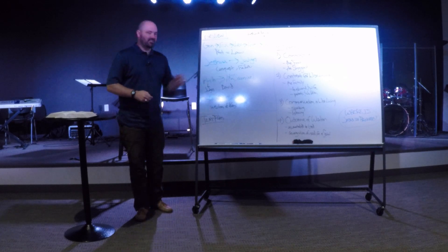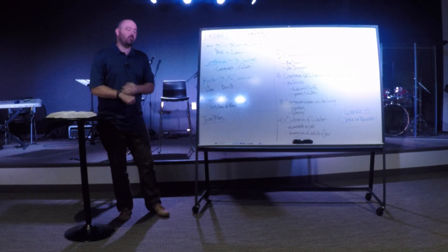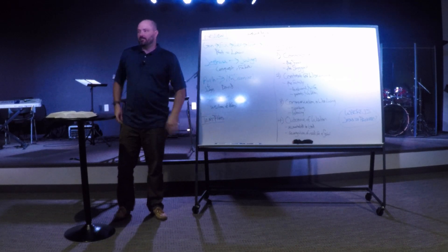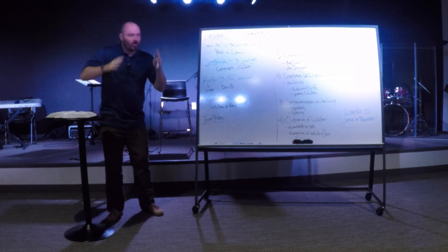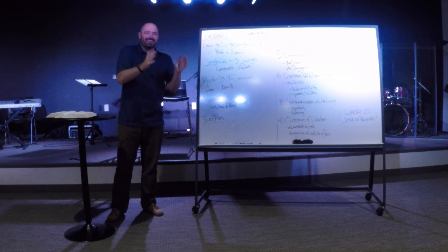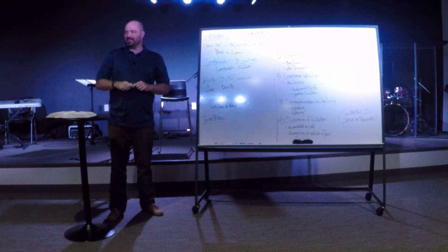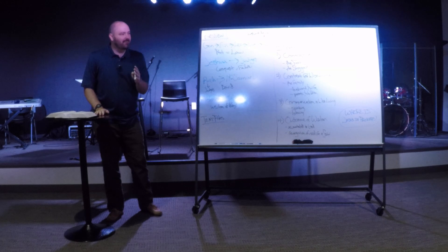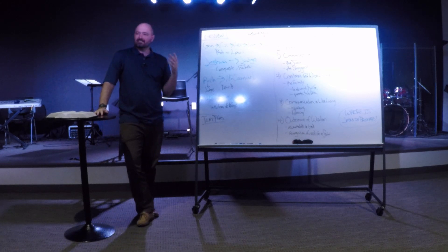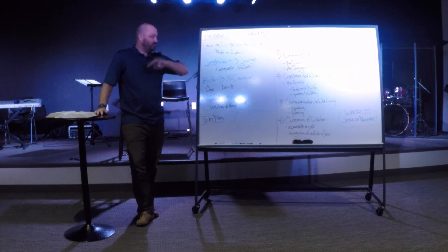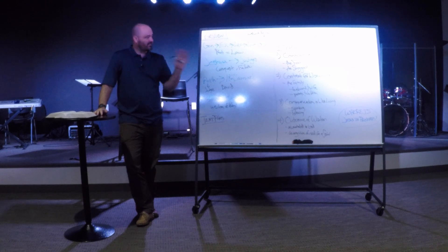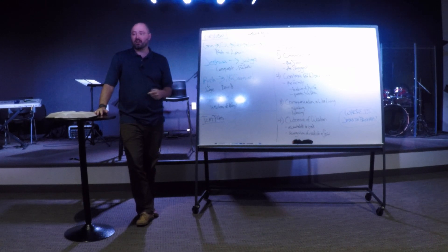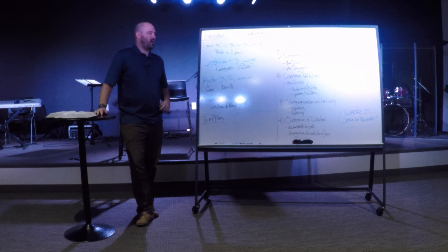We can't look at the scene in Samuel when Saul comes up and say that was never part of the deal, that they were never supposed to have a king. They were supposed to have one — they just weren't supposed to want one like the nations. God said: I have a timeline and plan for this. Samuel knew it and was like, 'I'm done.' But God said they're not rejecting you, they're rejecting me. I'll give them what they want, and they'll see what it's really like. Then I'll bring about my guy.